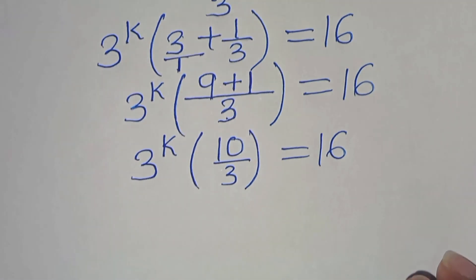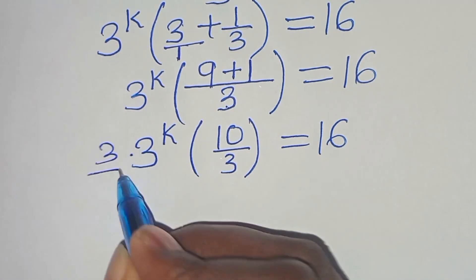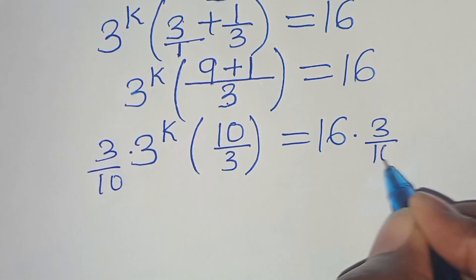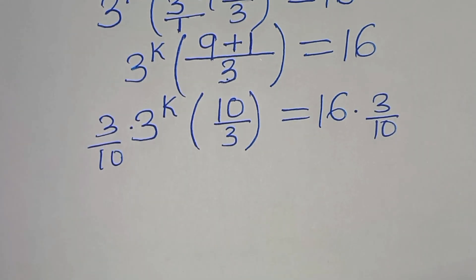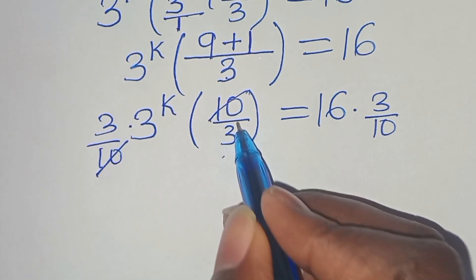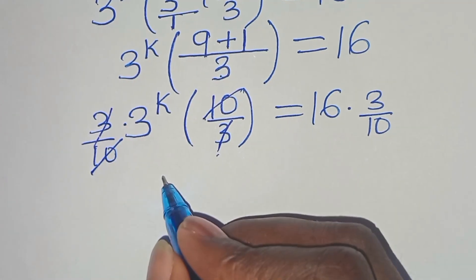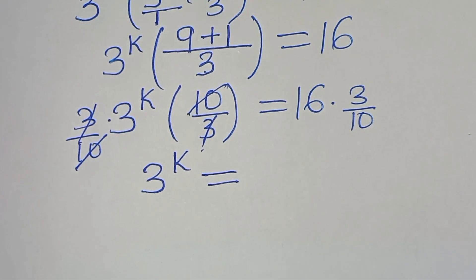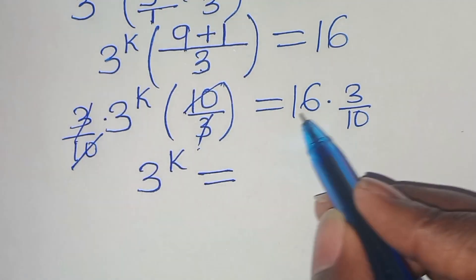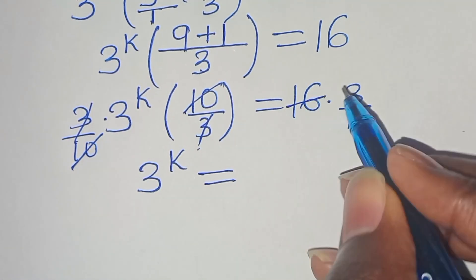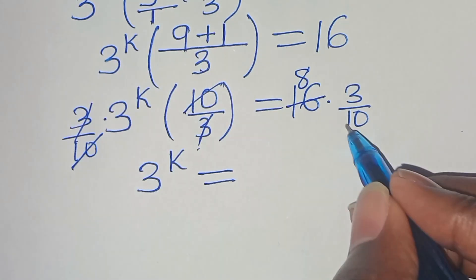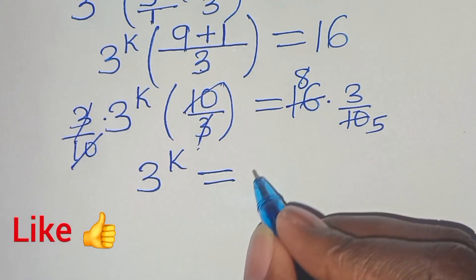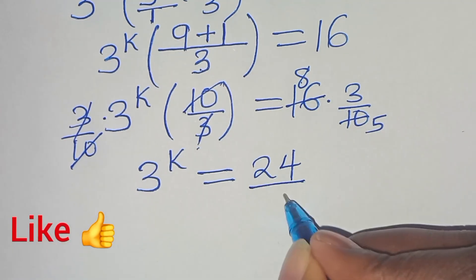We multiply both sides by 3/10 so that 10 and 10 cancel and 3 and 3 cancel, giving 3^k = 16 × 3/10. Simplifying: 16/2 = 8 and 10/2 = 5, so 3^k = 24/5.